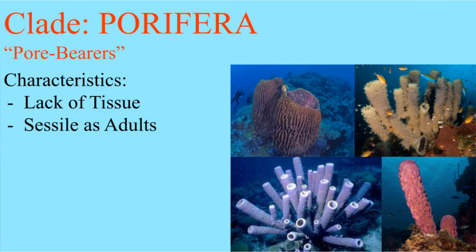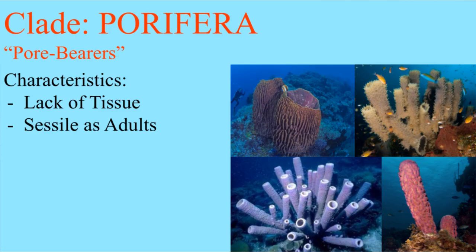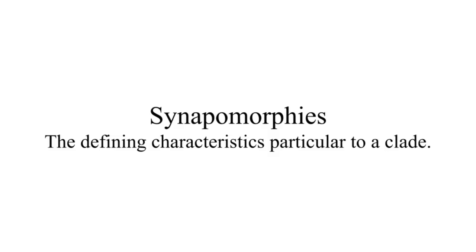Porifera means pore bearers because these are the sponges. Sponges don't have tissues, or in other words, all of their cells are the same without specialization, and they can't move as adults. By the way, we don't use the word characteristics, we use synapomorphies, which is just a more specific word for this thing.